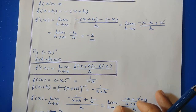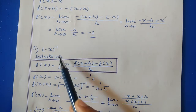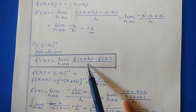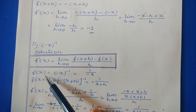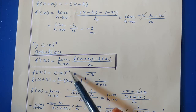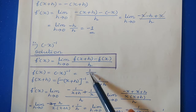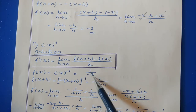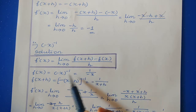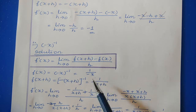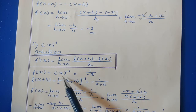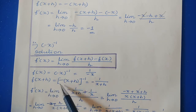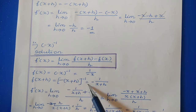Sub-question 2: minus x to the power minus 1. Again, use the first principle of derivative formula. Let f(x) equal to minus x to the power minus 1, which is 1 divided by minus x. Next, find f(x+h) by replacing x with x+h, so f(x+h) equals minus(x+h) to the power minus 1, which is minus 1 divided by (x+h).